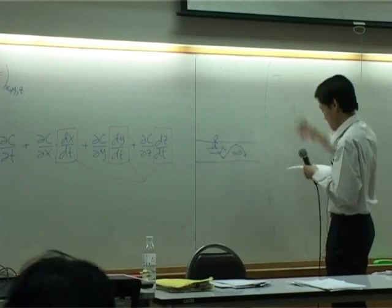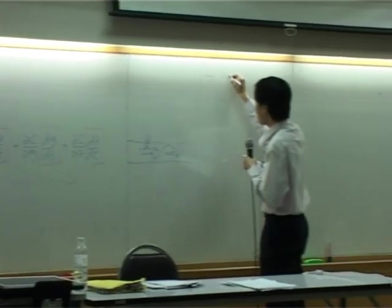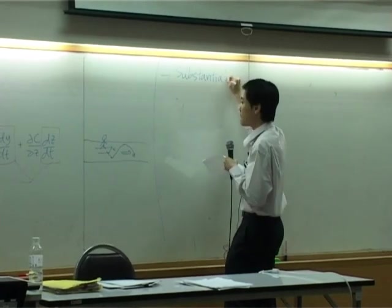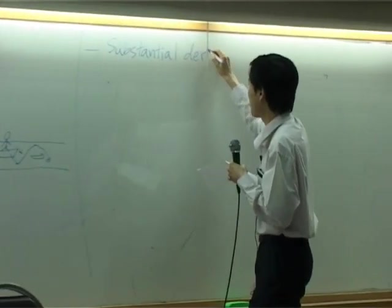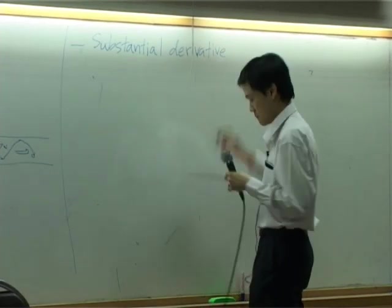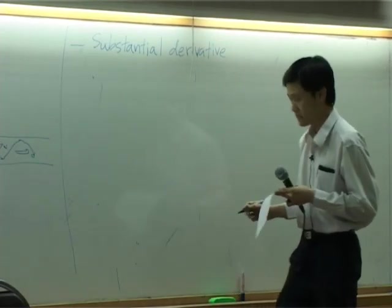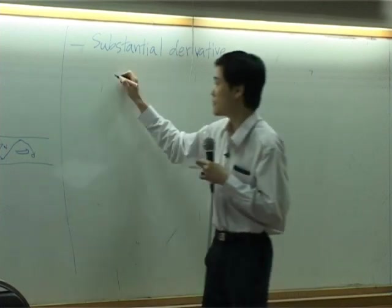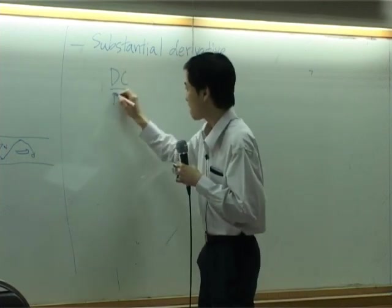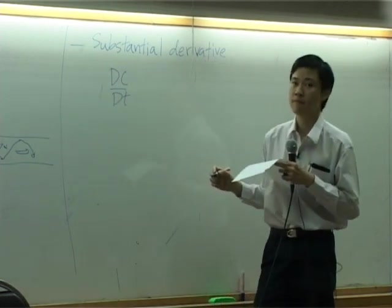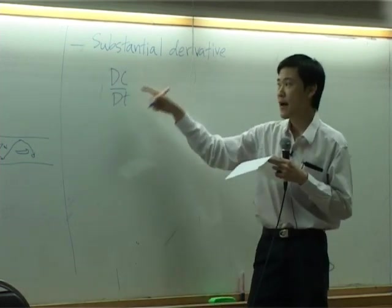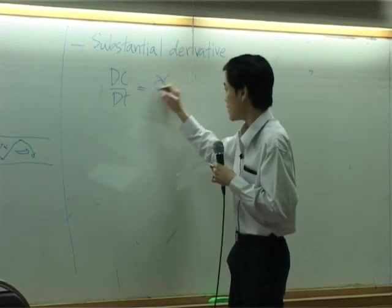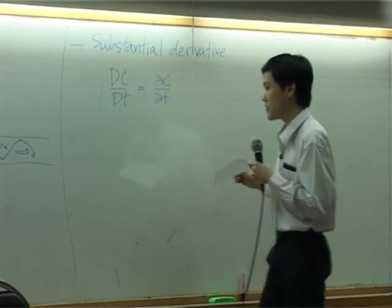The last one is called the substantial derivative. This one you have not seen before. It is capital D by DT. By definition, the substantial derivative looks like this.